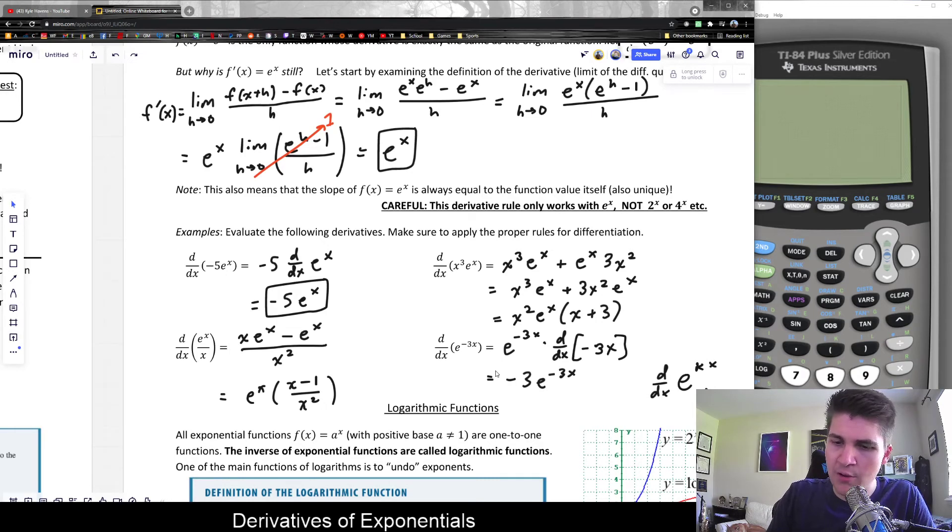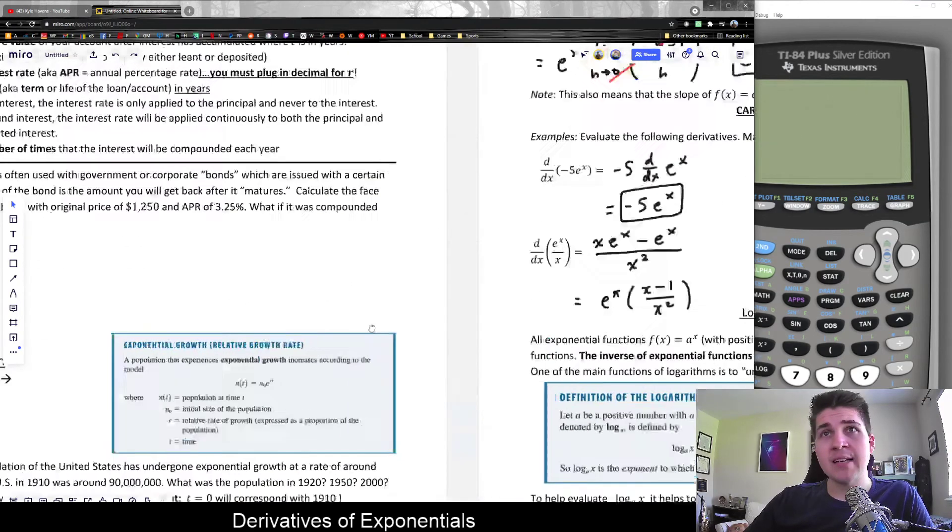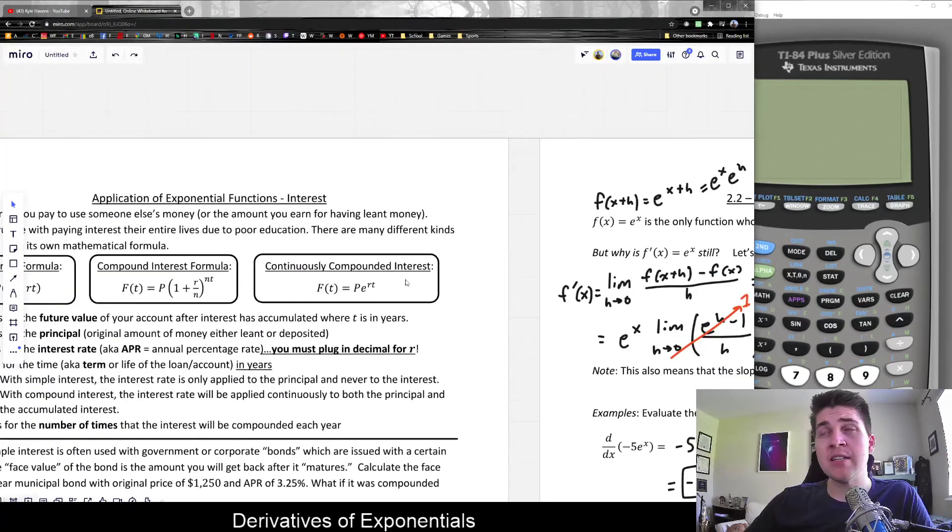So one thing that you could remember from this is if you have just a multiplier within e to the x, this is very common because exponential growth, like we saw in class last week, such as working with continuously compounded interest, there's usually other numbers in the exponent besides just a variable.